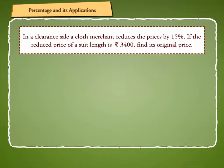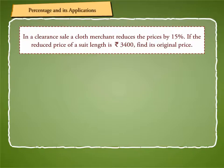Let's solve an example to understand percentage more clearly. In a clearance sale, a cloth merchant reduces the prices by 15%. If the reduced price of a suit length is Rs. 3,400, find its original price.